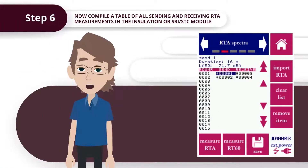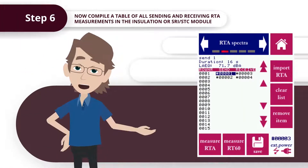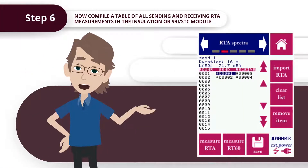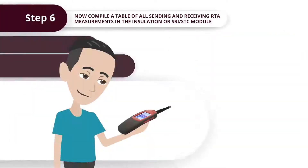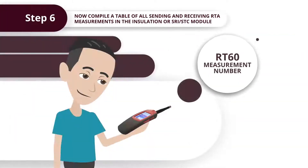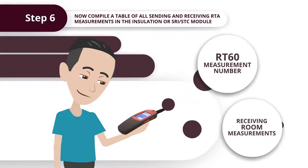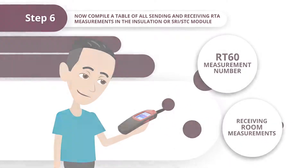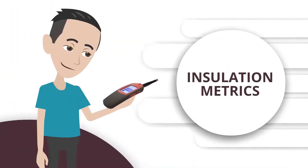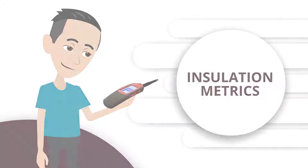Step 6: Now compile a table of all sending and receiving RTA measurements in the Insulation, or SRI and STC module. Also enter the RT60 measurement number and the receiving room measurements. Your Bedrock meter will now accurately calculate your insulation metrics.